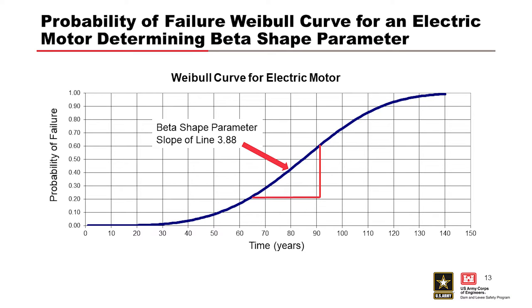Again, here's the Weibull curve for electric motor developed from data that we've collected at USACE projects. This particular one has a beta shape parameter of 3.88. The higher that number goes, the steeper the slope at that point, the quicker that your component will fail after it reaches the characteristic life.